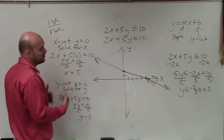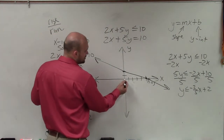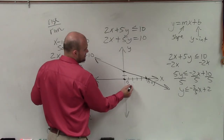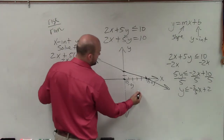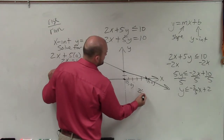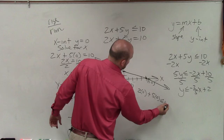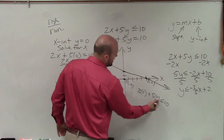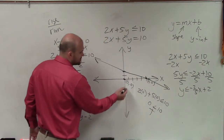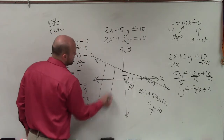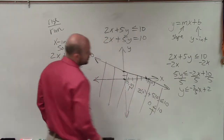To determine whether to shade below or above the line, I'll use a test point. The best test point to use is (0, 0). Plugging in: 2 times 0 plus 5 times 0 is less than or equal to 10 — that's 0 is less than or equal to 10, which is true. Since this test point is true, all of the points below the line are part of the solution.